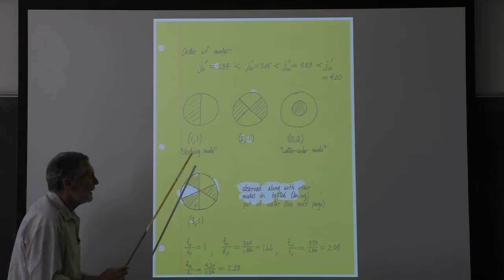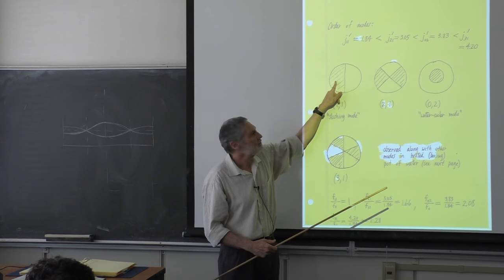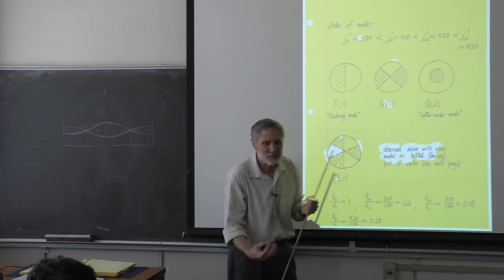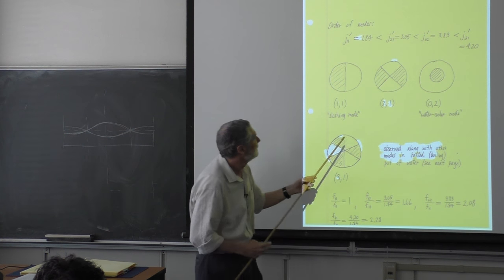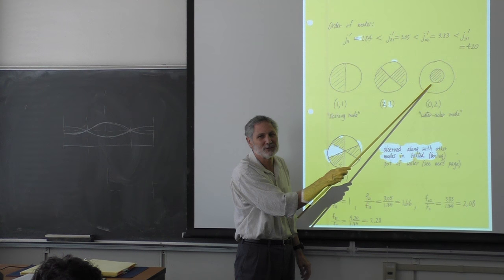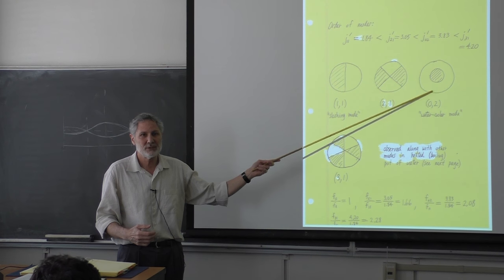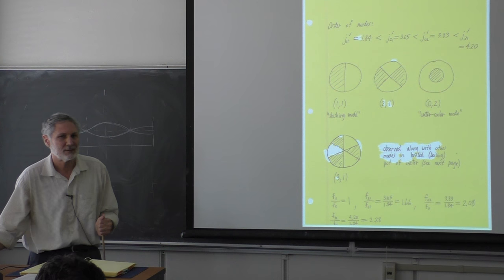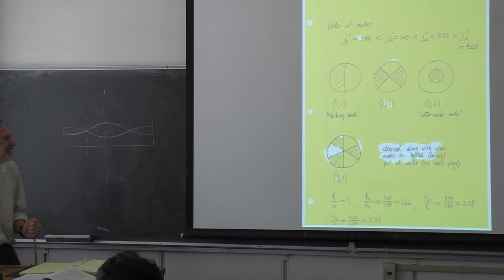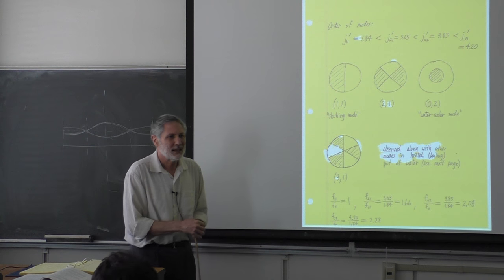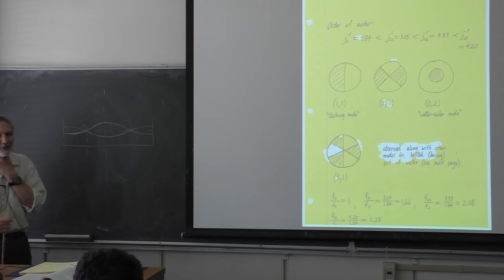What tends to happen is the bubble coming up doesn't excite the sloshing or J₂₁ modes because they don't have the right symmetry. When the bubble comes up and breaks through the surface, it favors the M=0 mode - the lowest mode that it favors. So the other modes tend not to be excited, and this water cooler mode can last for a long time. It's beautiful - it's a Bessel function. You can tell people that in the office.